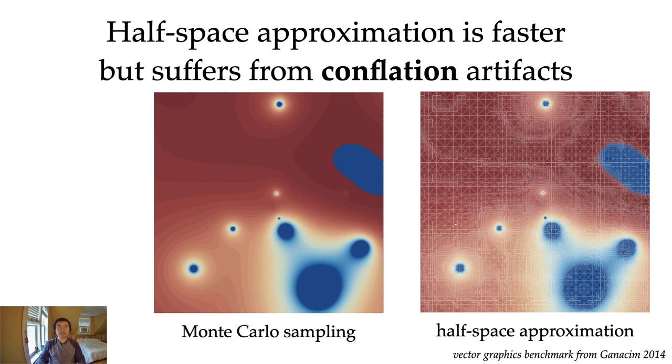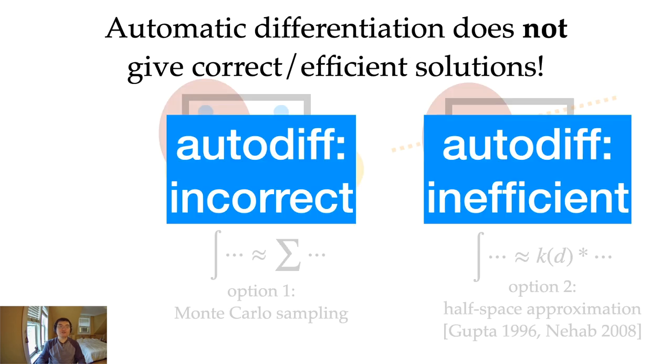For example, one notorious artifact of the half-space approximation is something people call the conflation artifacts. If you have two shapes that overlap on part of the boundaries, you'll see something like the image on the right. Modern GPU rasterizers don't use half-space approximation because of this artifact. Still, many CPU rasterizers are using it because it is fast.